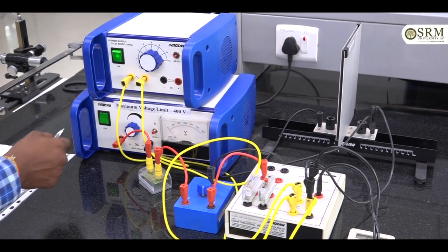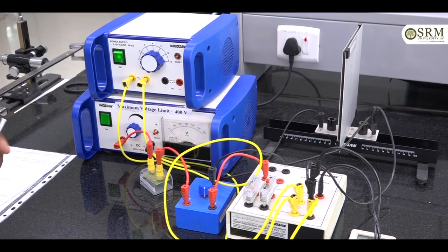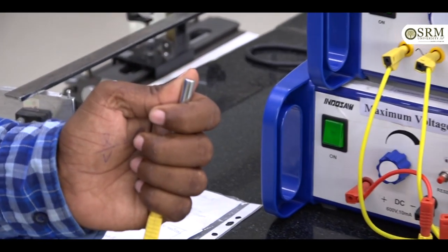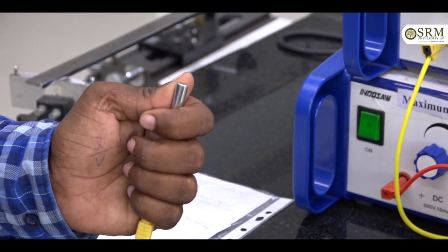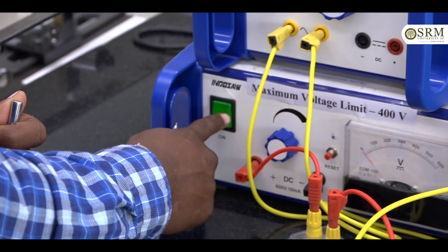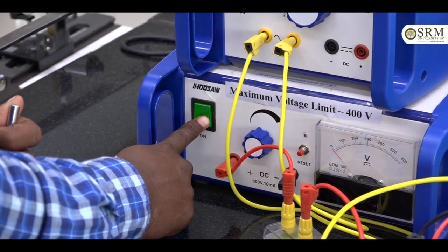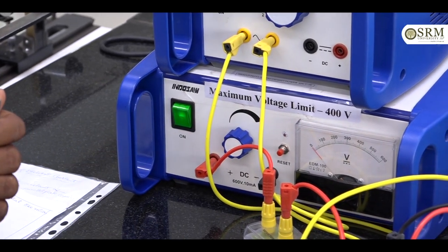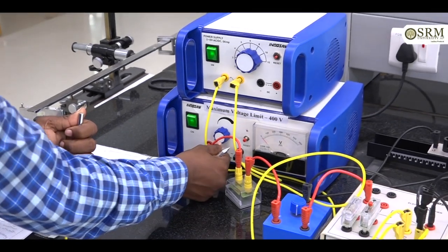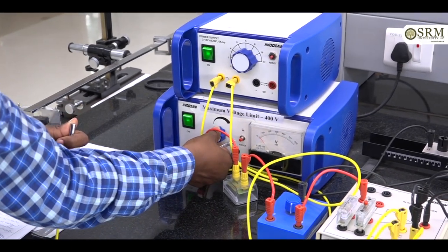Step 2: place discharging rod in your hand. Step 3: switch on maximum voltage power supply and apply 50 volts.